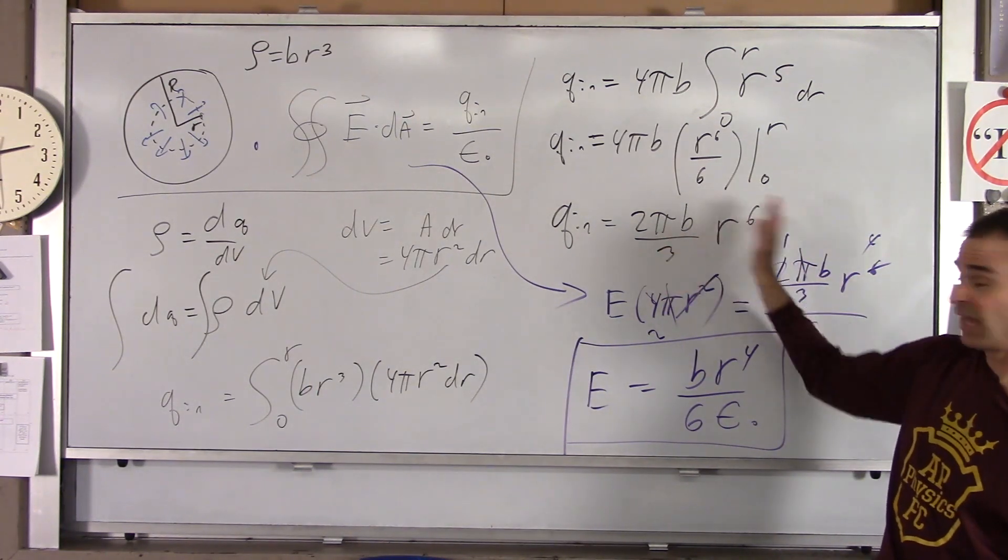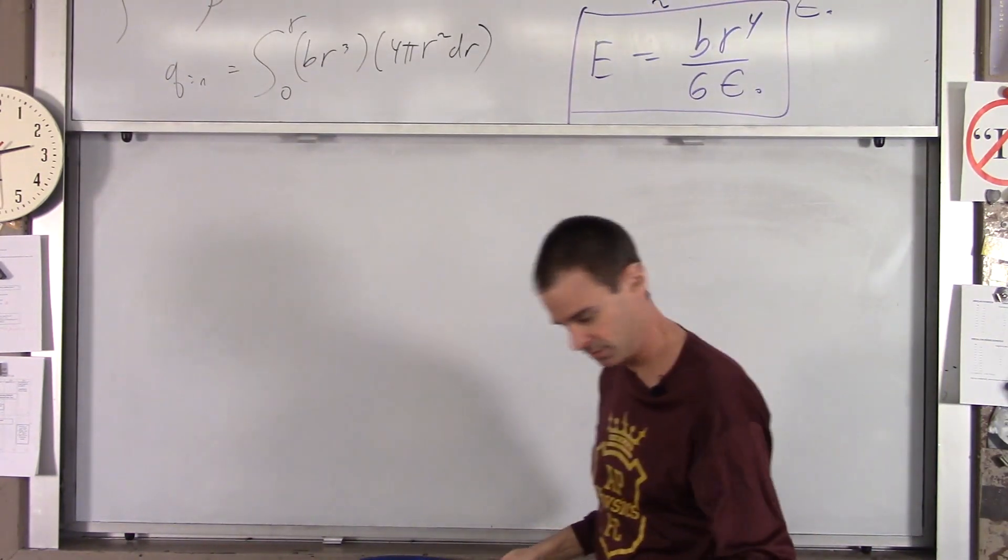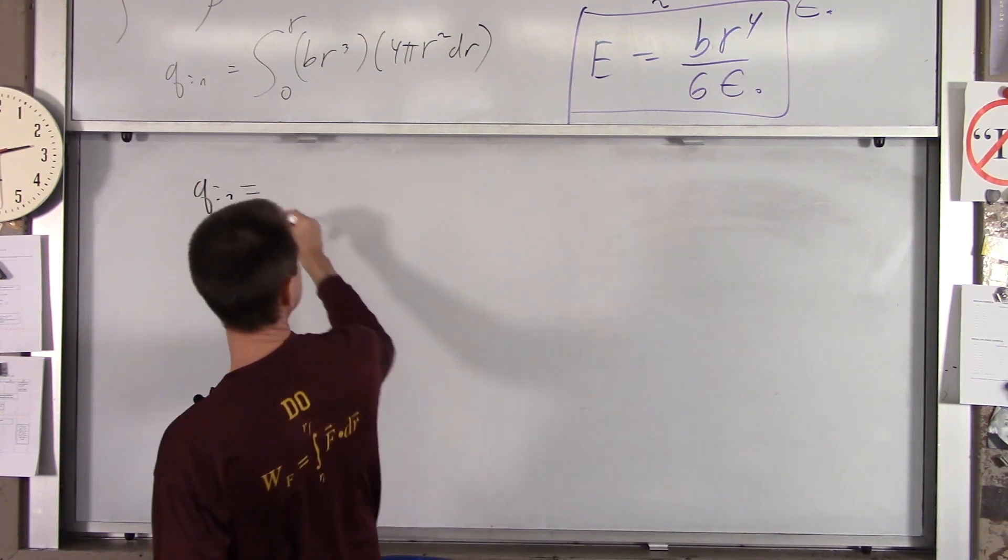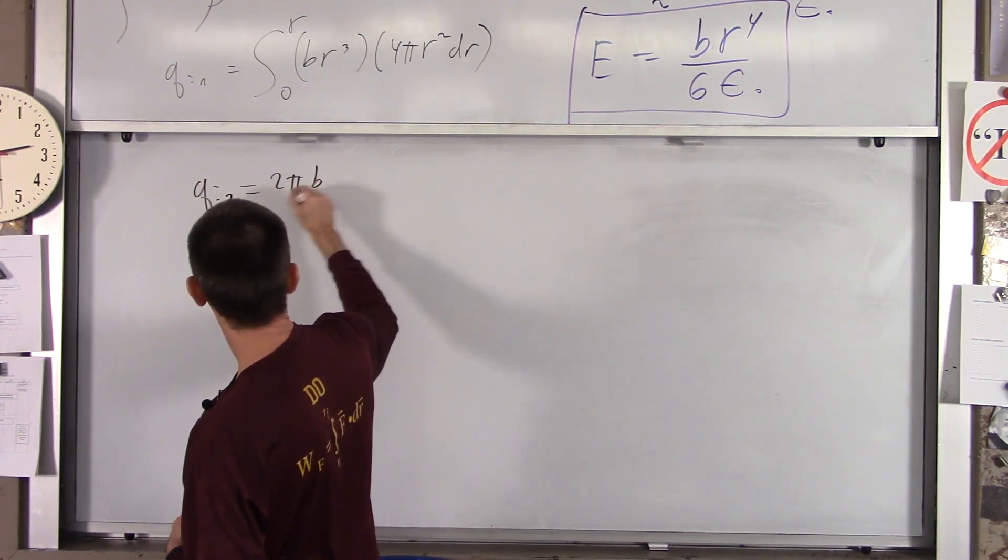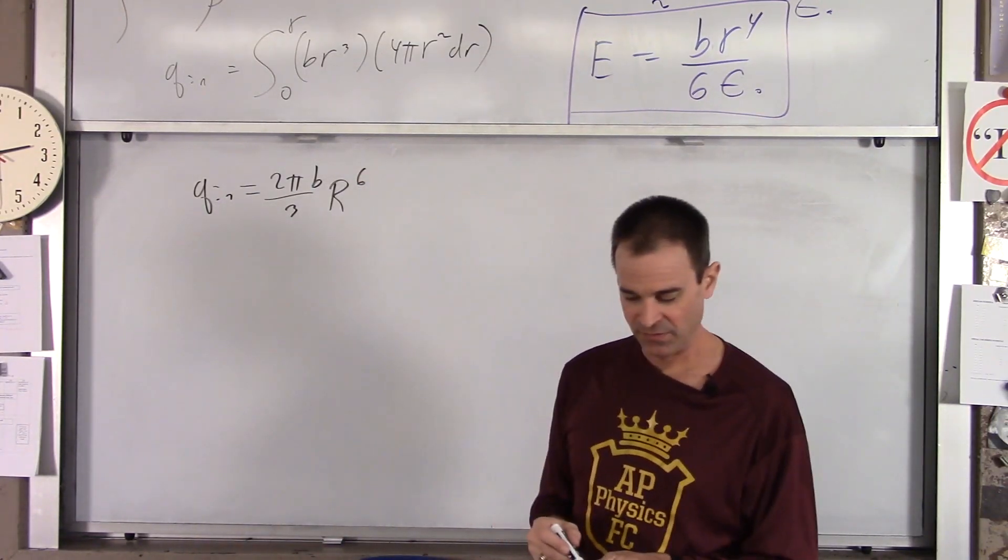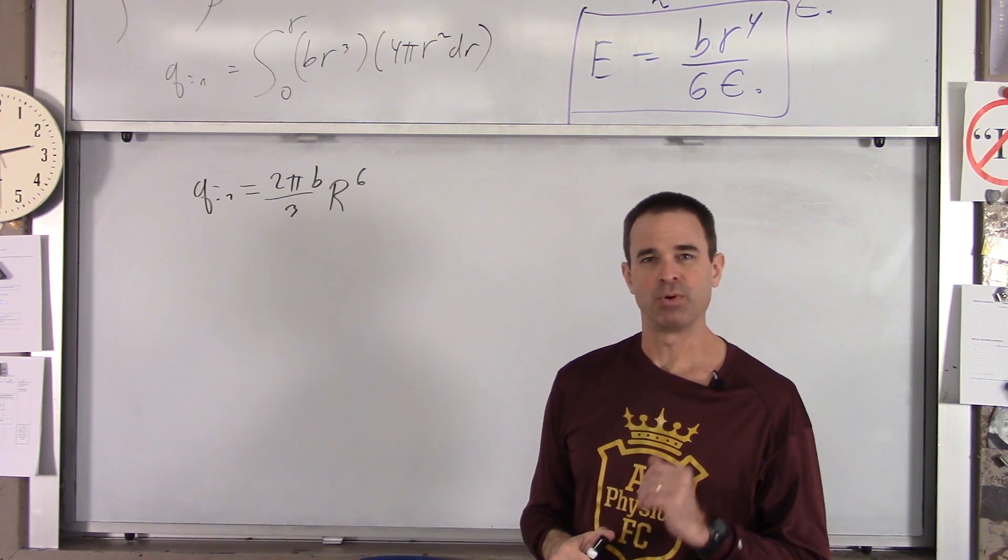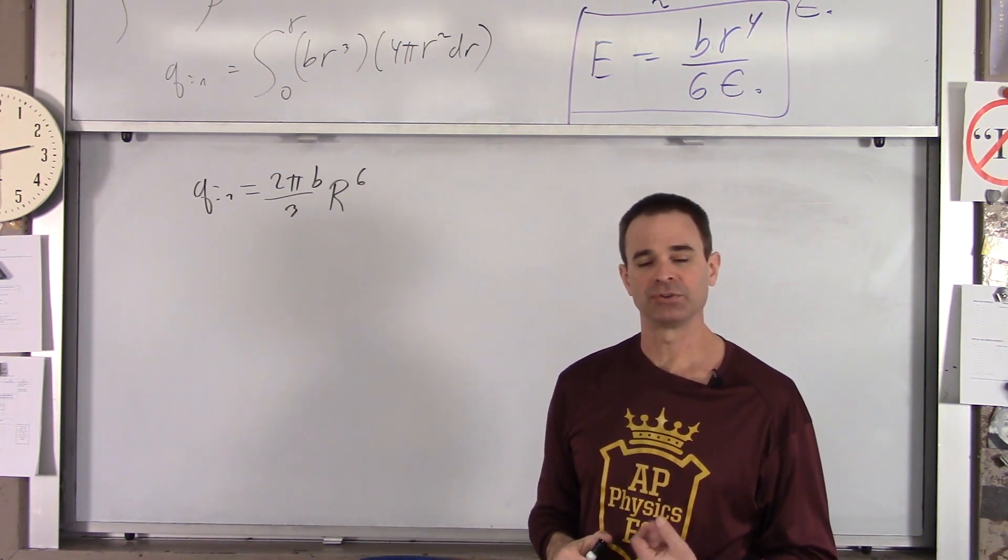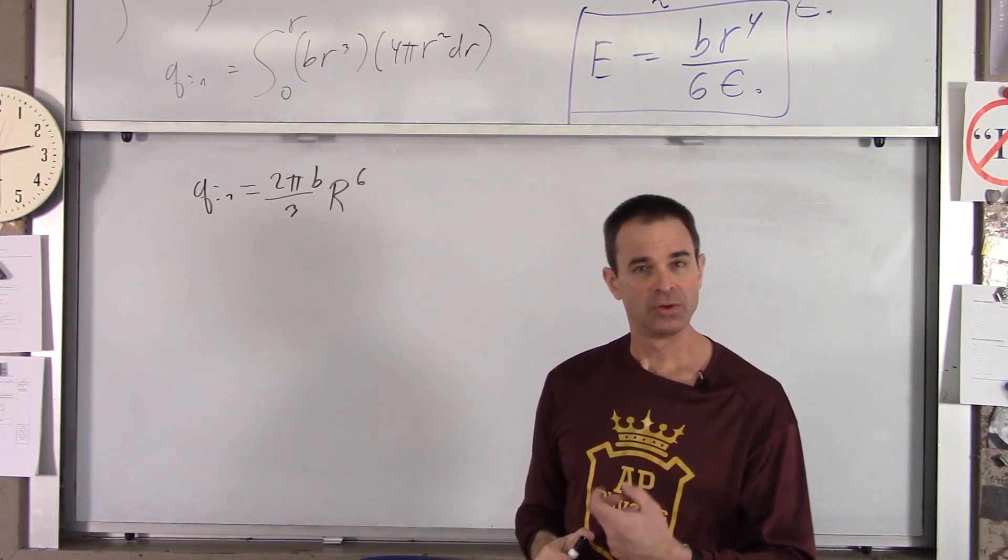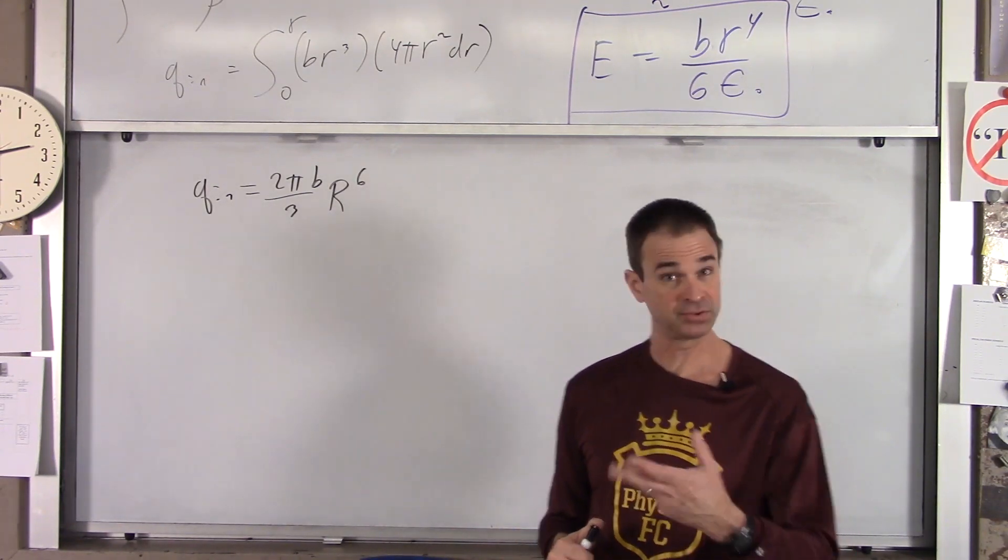So all you do is you change this from 0 to little r, you change it to 0 to big R. So your q_in, instead of being this, is the same exact expression, except for it's big R to the sixth. So let's write that down. q_in equals 2 pi b over 3 big R to the sixth. Now before we finish this off, when you're outside the fuzzy ball charge, it should act like a point charge. If it's going to act like a point charge, what mathematical relationship should E take with R? Well, we know that for a point charge, the electric field is kq over R squared. It should be an inverse square.